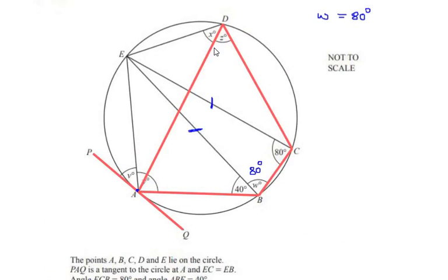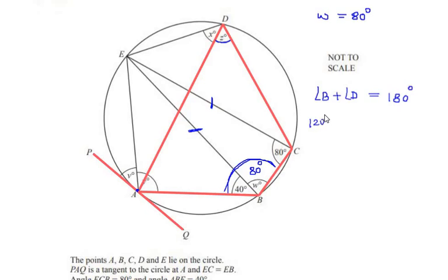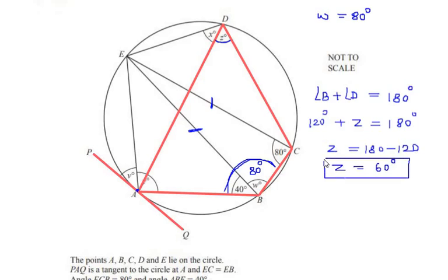Using this theorem, let us find angle Z. Angle Z and the complete angle B are opposite to each other in quadrilateral ABCD. So angle B plus angle D is equal to 180 degrees. Angle B is 40 degrees plus 80 degrees, so the total angle B is 120 degrees. Therefore Z is equal to 180 minus 120, which gives angle Z as 60 degrees.